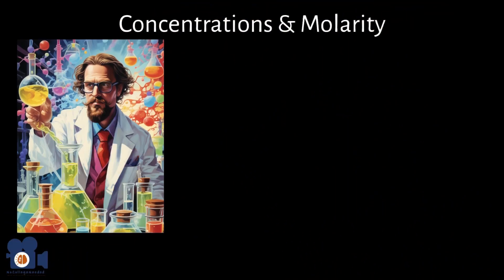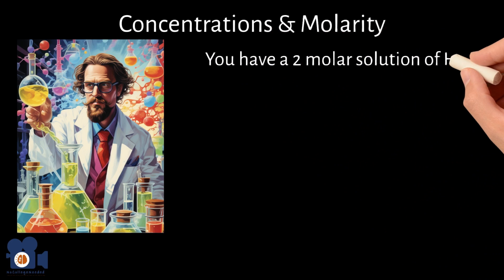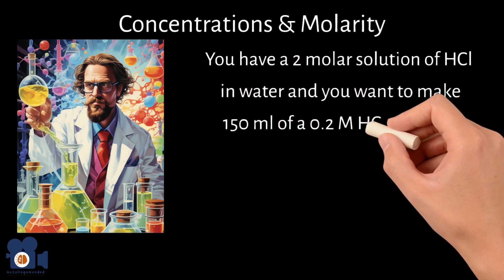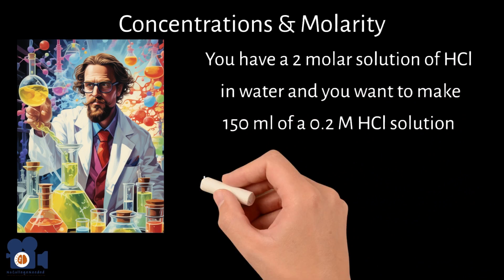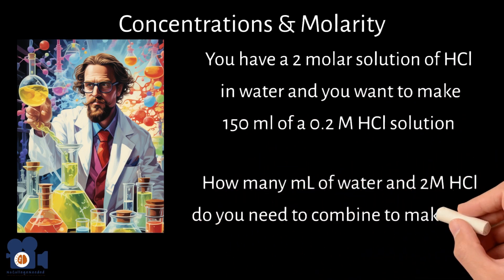Unit 4.5 goes over concentrations and molarity. With this, we brought up the equation C1V1 equals C2V2. Let's say you have a 2 molar solution of HCl in water and you want to make 150 milliliters of a 0.2 molar HCl solution. How many milliliters of water and 2 molar HCl do you need to combine to make this?